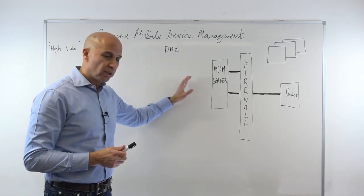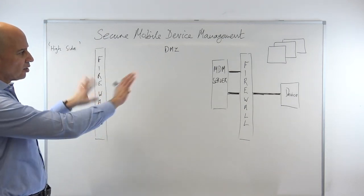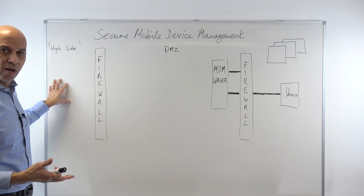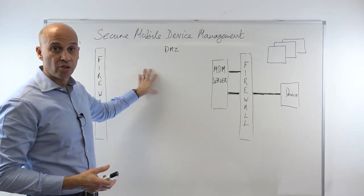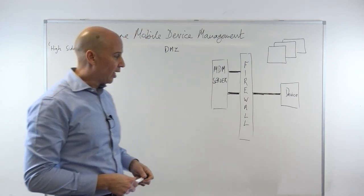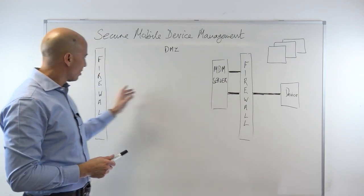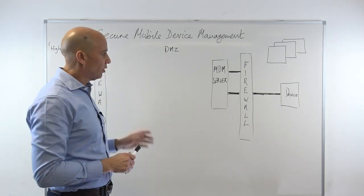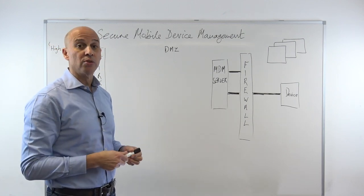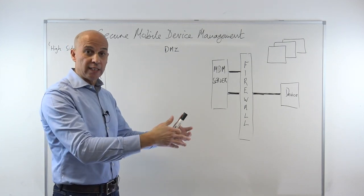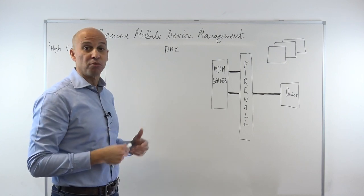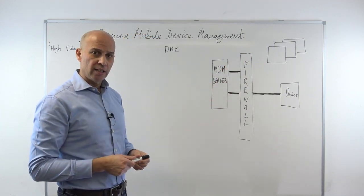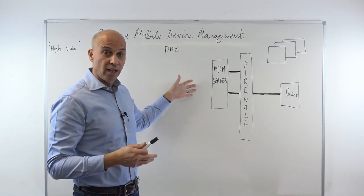The challenge that organizations have — and this is what led to the work that we did — is that MDM servers are typically not in the most secure part of an organization's network. In a very basic sense, if we imagine a more secure network, let's call it the high side, segmented from a demilitarized zone, a DMZ, which again is segmented from the internet, the challenge most organizations have is that the MDM server doesn't sit in the high side where the greatest protection exists.